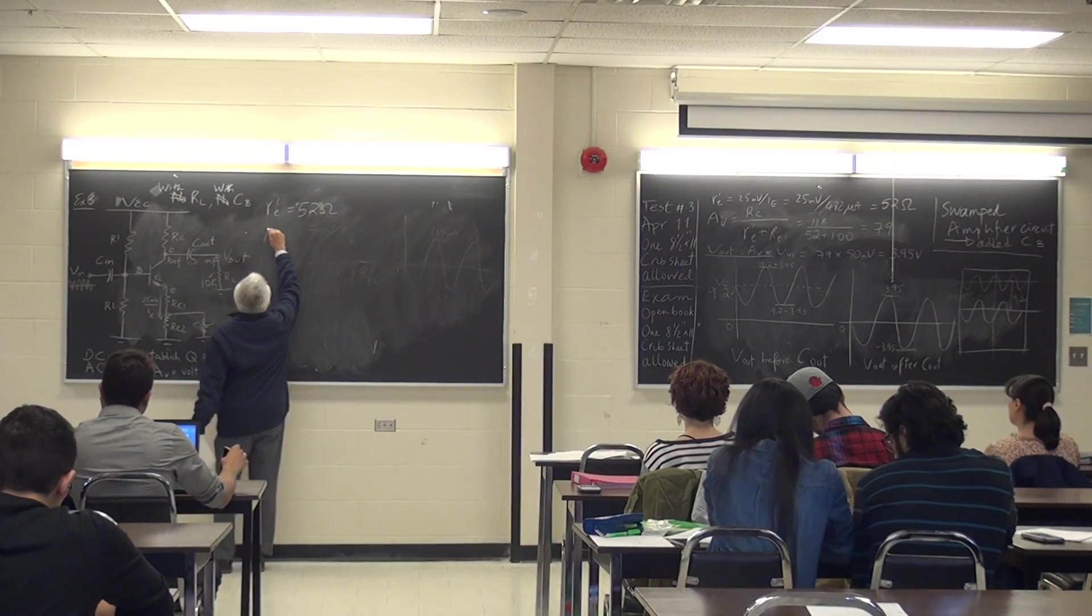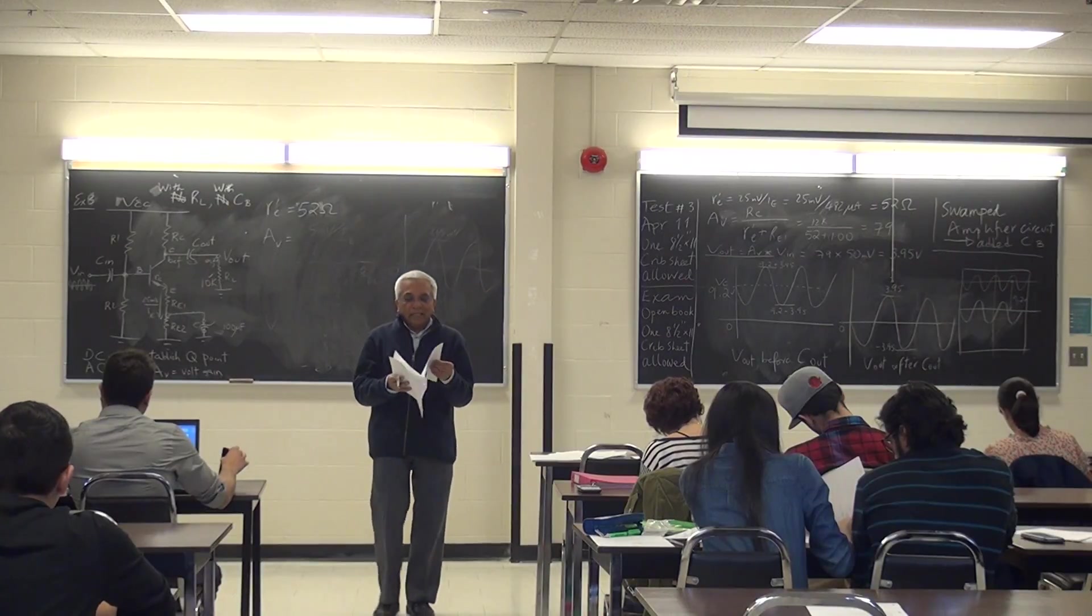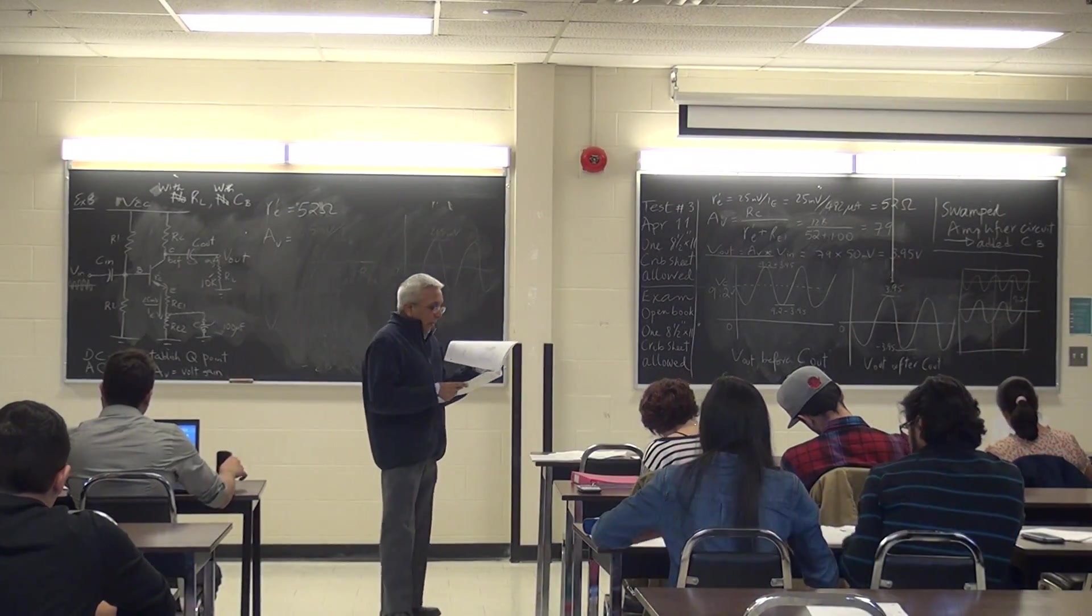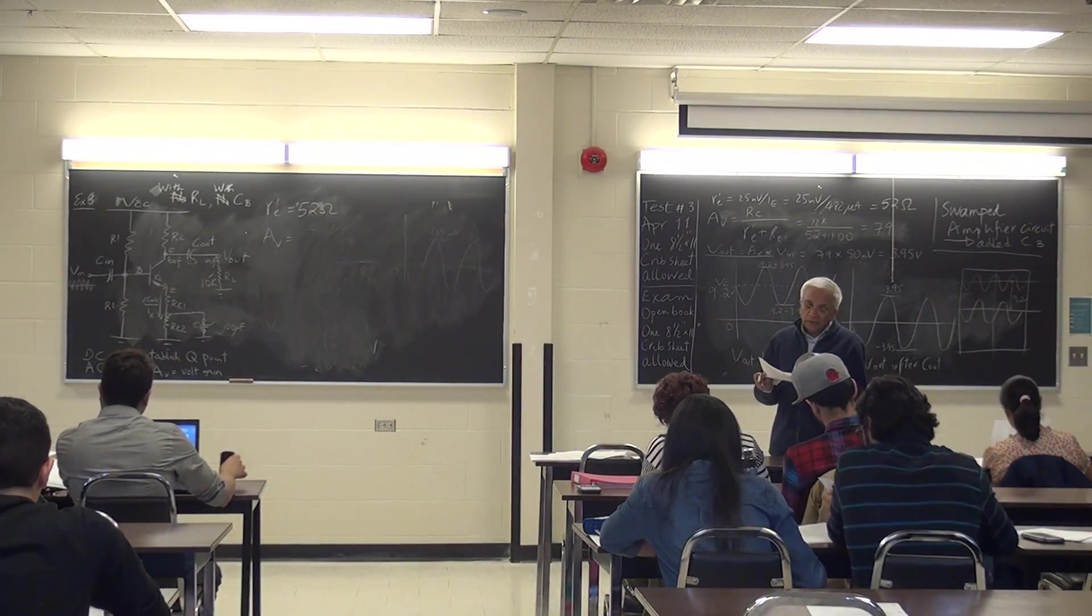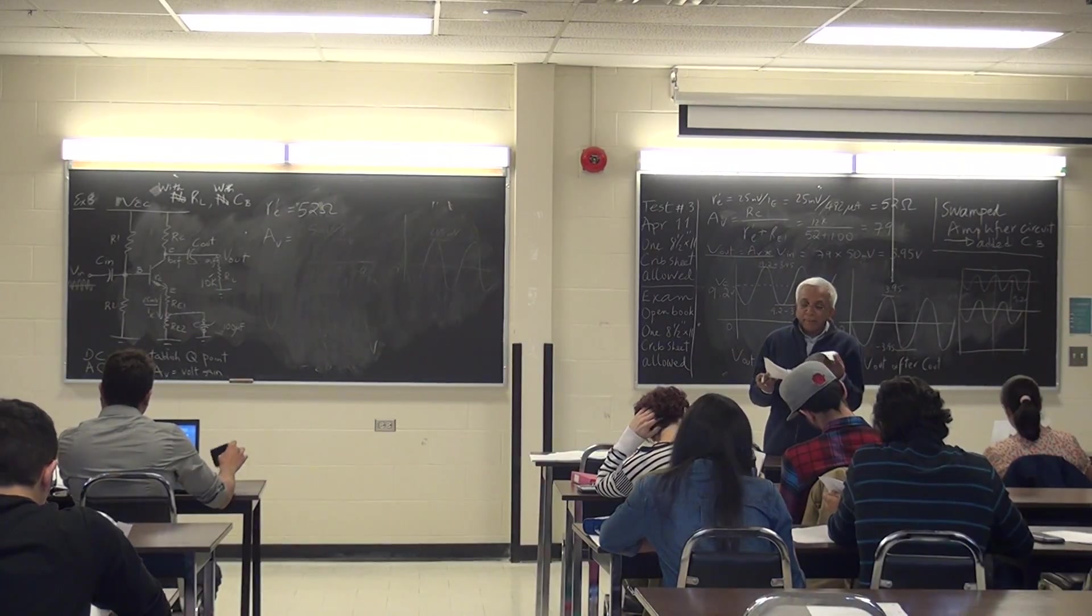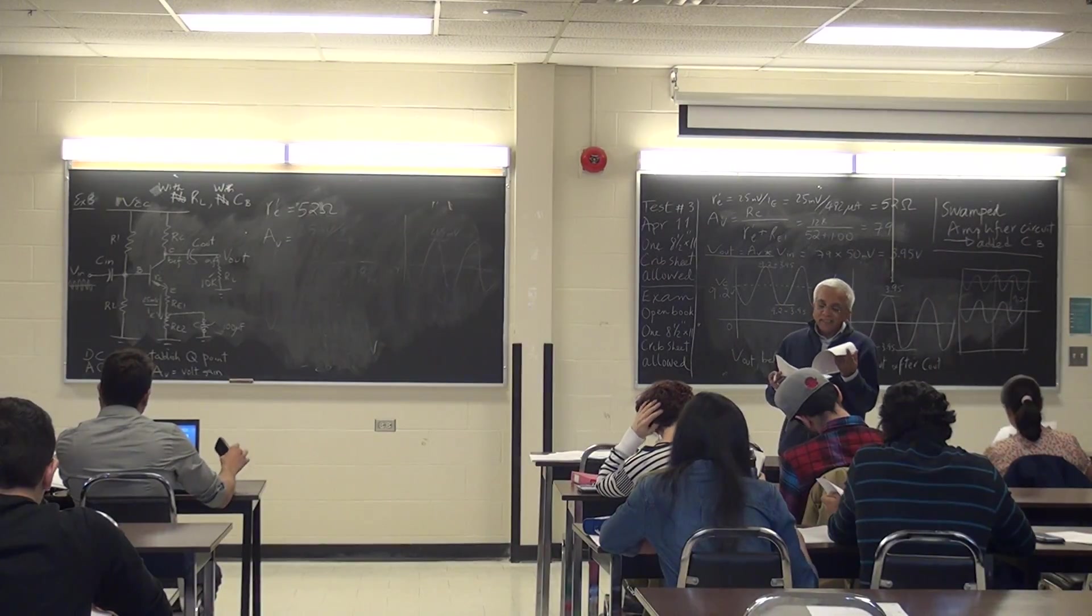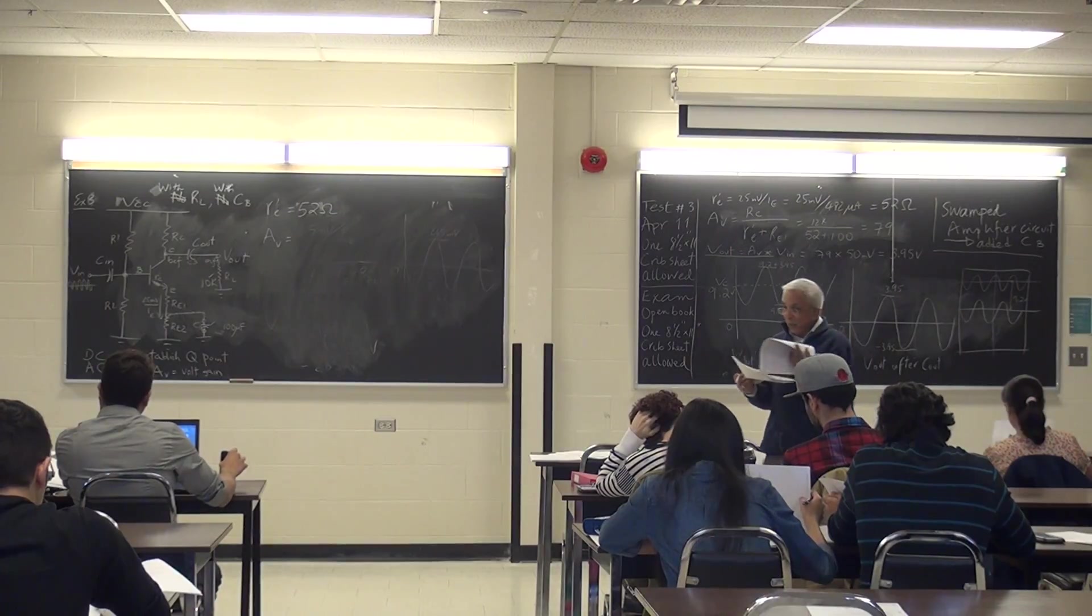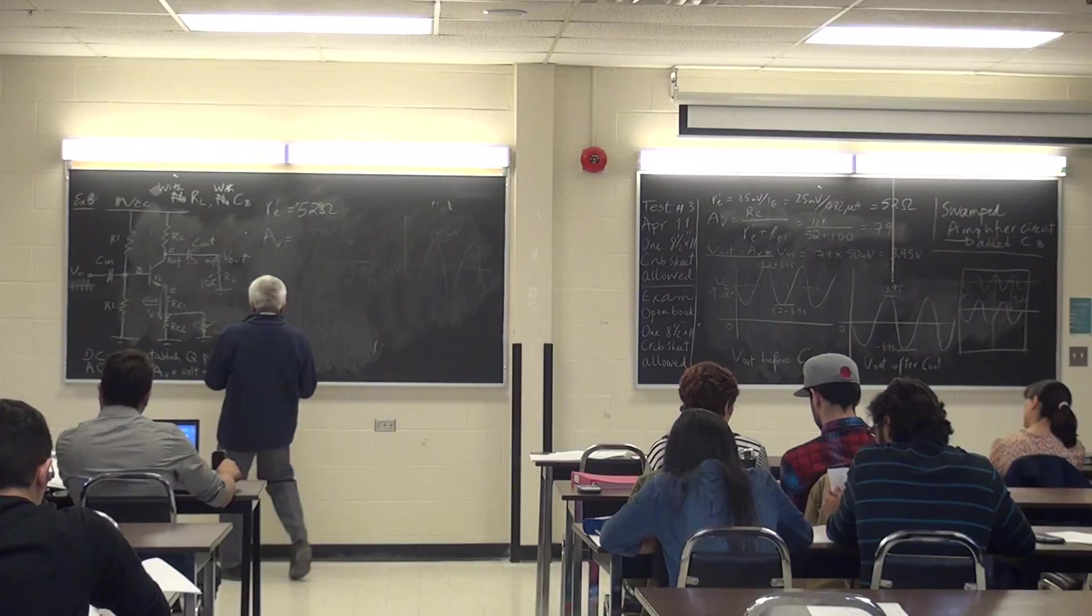Let's find AV now. What is AV? I go to page 3. Page 3, voltage gain from an emitter amplifier with bypass capacitor with load resistor. Which case is it? Is it 4? Yeah, it's 4, isn't it?